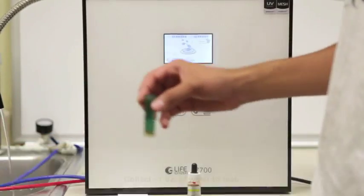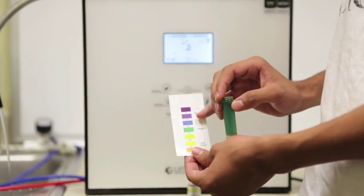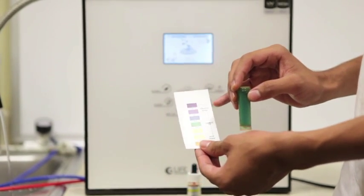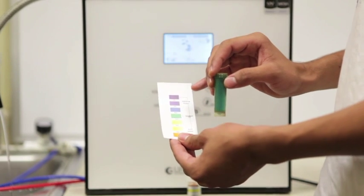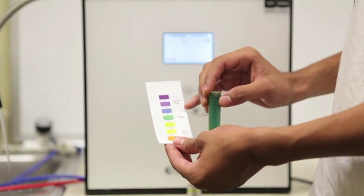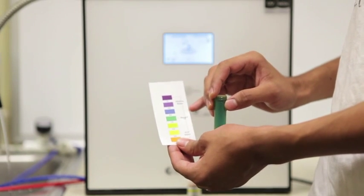On alkaline 1, you're looking for a blue color, which would illustrate about an 8 pH on your color chart. On level 2, you're looking for a slightly darker blue, which would indicate about a 9.5 or a 10.